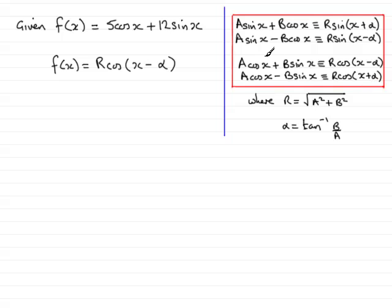So assuming that you are aware of this, what we can do is compare the 5 cos x plus 12 sin x with this expression here and you'll see that a corresponds to the 5. So in this particular example a is going to be 5 and the b value is going to be 12.